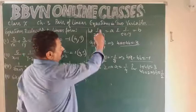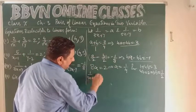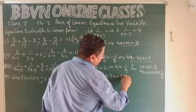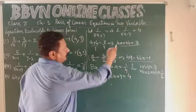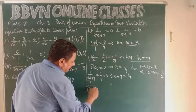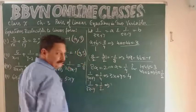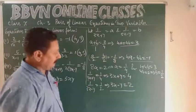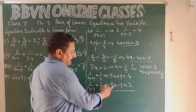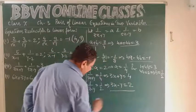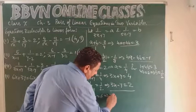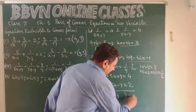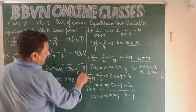Back-substituting: 1/(3x+y) = a = 1/4, so taking the reciprocal, 3x + y = 4. Similarly, 1/(3x-y) = b = 1/2, so 3x - y = 2. Adding these two equations: 6x = 6, giving x = 1. Substituting into the first: 3(1) + y = 4, so y = 1. The solution is x = 1 and y = 1.